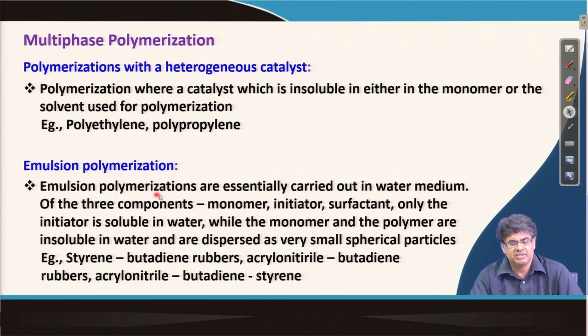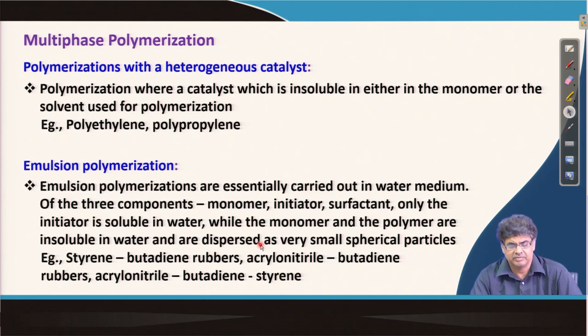In emulsion polymerization, the reaction is carried out in an aqueous medium with three main components: monomer, initiator, and surfactant. I will discuss this in detail in a few minutes.